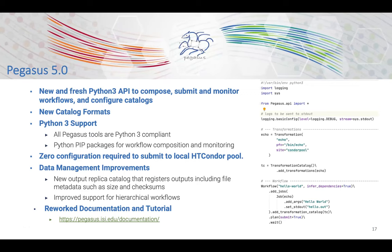Pegasus 5.0 was released a couple of years back — a big undertaking where we decided to focus heavily on a Python 3 interface for users to describe their workflows. The Python 3 Pegasus API is complete: it allows you to compose workflows, submit them, monitor them, and configure all the catalogs. All Pegasus tools are Python 3 compliant. In the default case where you're just trying to run workflows on your local desktop or laptop, there's zero configuration required. We did a lot of data management improvements and also reworked our documentation and tutorial.